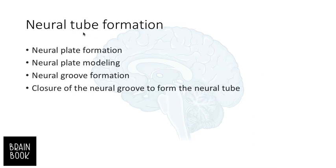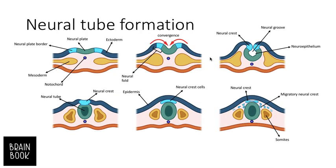For neural tube formation we have four different stages: neural plate formation, neural plate modeling, neural groove formation, and finally closure of the neural groove to form the neural tube. As you can see in the diagram, here we have the neural plate — it is ectoderm. After gastrulation we have ectoderm containing the neural plate and neural plate borders that surround the neural plate, shown here in cross-section.